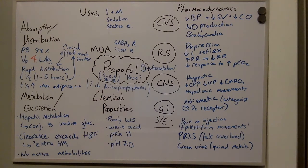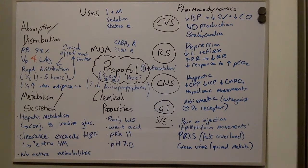Its chemical properties include: it is a weak acid and is poorly water-soluble. It has a pKa of 11 and a pH of 7. This means it mainly exists in its unionised form at a pH of 7.4.